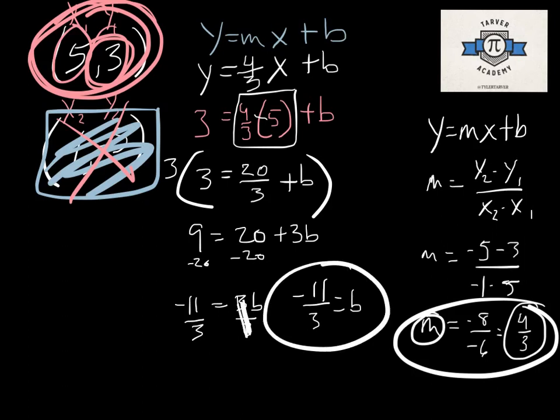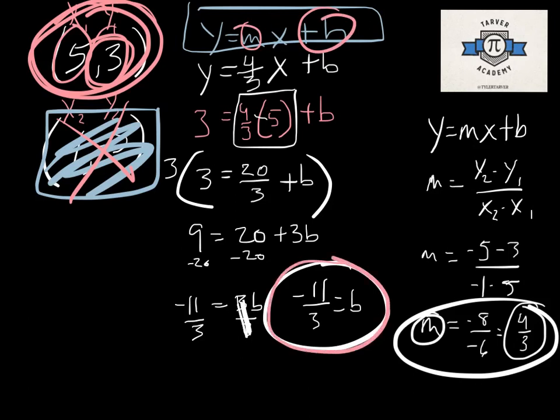Now, what all did we have to find? In our original equation, or in our original slope-intercept form, all we have to find is our m and our b. Did we find those? Well, yes, we did. So we just plug those into our y equals mx plus b, and we've got our final answer.